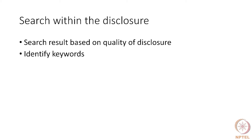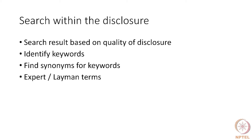You have to identify keywords because an invention is searched through keywords. You should also find out the synonyms for keywords, because if there are words which can be alternatively used, then you would also search the synonyms and do a search of the alternative words as well. You would also look at words used by experts as well as words used by laymen.